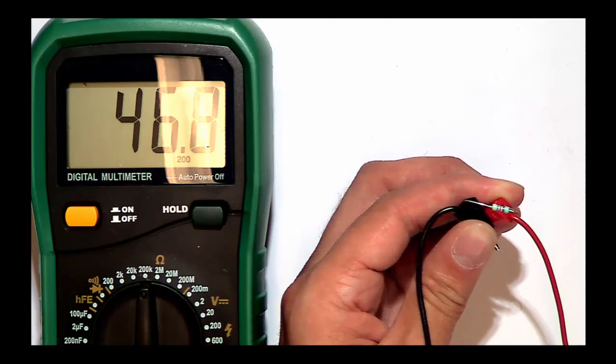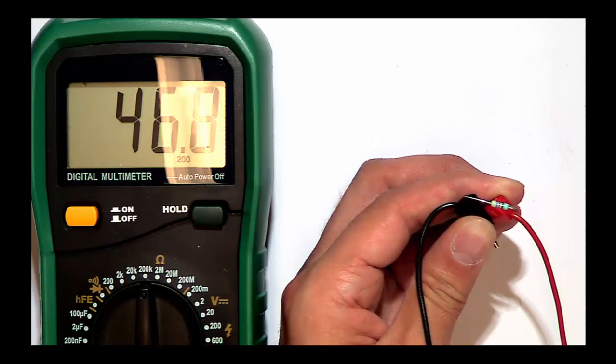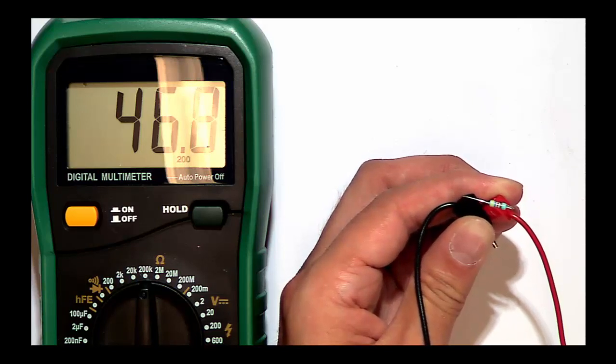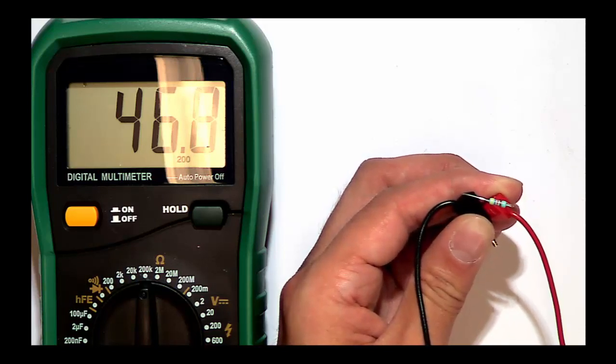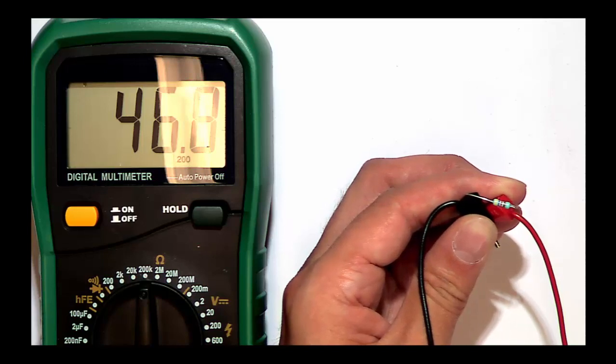Reading colour codes is a useful skill to have. However, it is time consuming and hard to do if you have poor eyesight or are colour blind. Most times it is best to measure the value using a multimeter. Although there are challenges doing this if the resistor is already mounted on the PCB, as will be discussed in the electrical testing lecture.